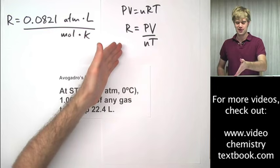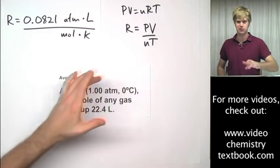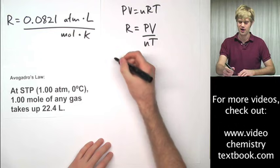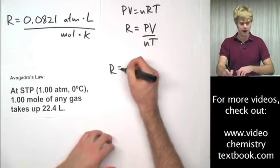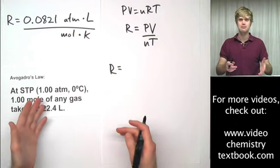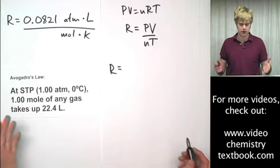Let's take the ideal gas law rearranged here and plug the values from Avogadro's law into it. We can get R by assuming we're at STP and we have 22.4 liters of gas.